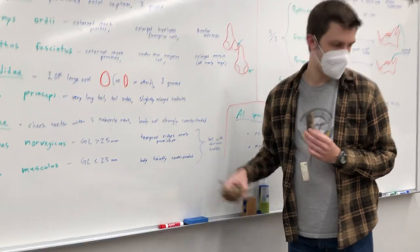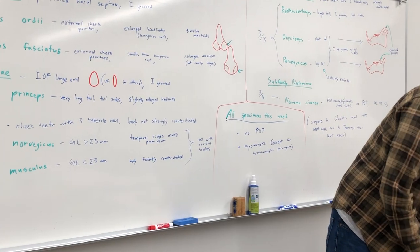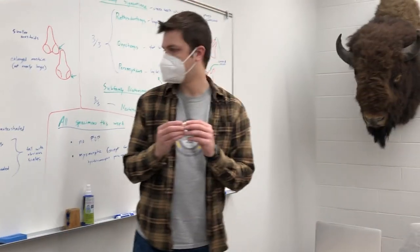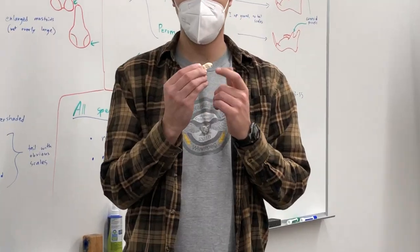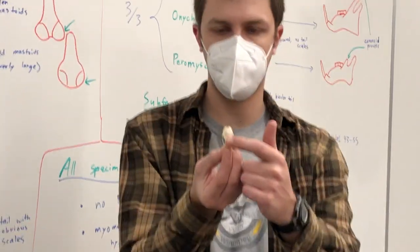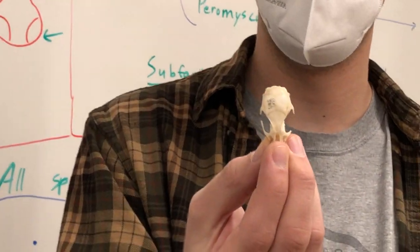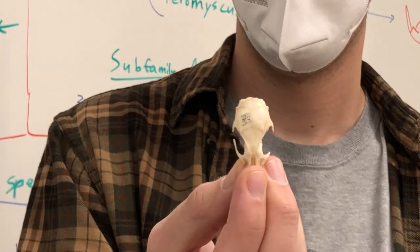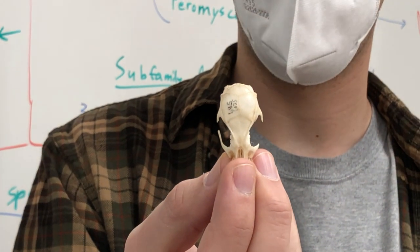The other thing for rat skulls is they often have really prominent temporal ridges, so you can see these things that kind of look like eyebrows, just these really strong ridges. That's something that rats often have.